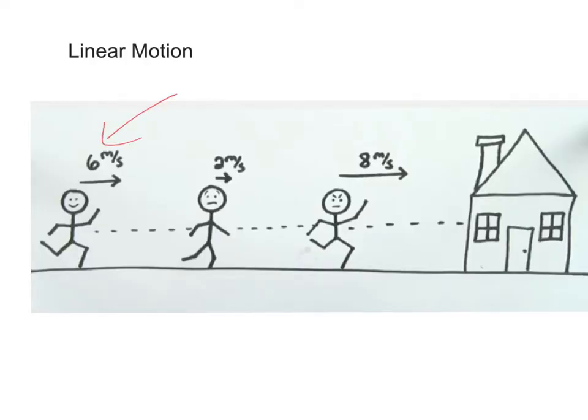That's what that symbol, M slash S, sounds like when you say it out loud: meters per second, which is pretty fast. And then this person gets a little bit into the trip and realizes, oh man, I'm out of shape, and they have to slow down to just two meters per second. And then the person decides, no, I'm not going to miss my show, and they pick it up and they're going eight meters per second the rest of the way to the house.